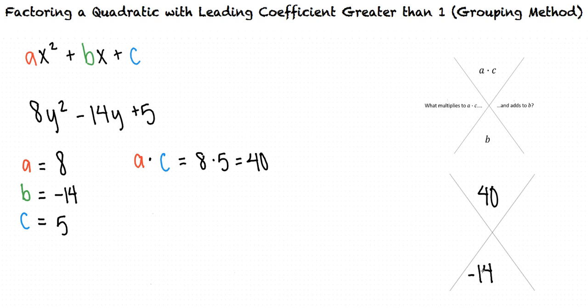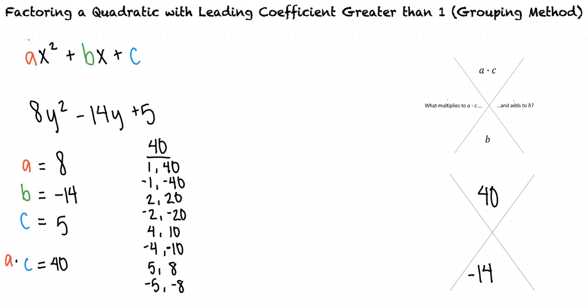Our next step is to make a list of pairs of factors of 40. From these factors of 40, we have to decide which ones add up to our b value, negative 14. We can see that the factors of ac that add up to negative 14 are negative 4 and negative 10, so we can input these numbers into our chart.